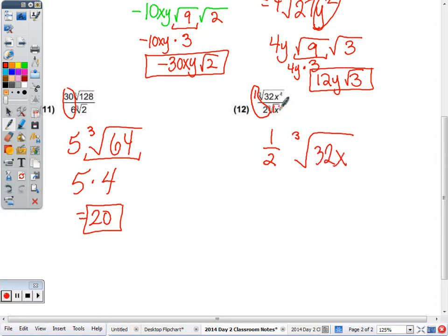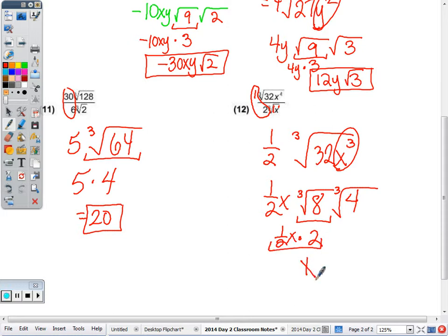x to the 4 minus 1 is x cubed. So I'm going to take 1 half perfect cube, so I'm going to pull the x out front. Largest perfect cube factor of 32 is 8. It's 8 times 4. Cube root of 8 is 2 times 1 half x. Half of 2 is 1 or 1x. And then cube root of 4. So x cube root of 4 is my answer.